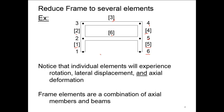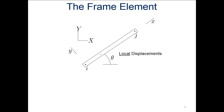Frame elements are a combination of axial members and beams — we put these together. We've already done the last two lectures: we talked about axial members focused on trusses as a two-force member, and then we looked at beams where we had both the lateral loading and the rotation. So we're going to combine those here for our frames.